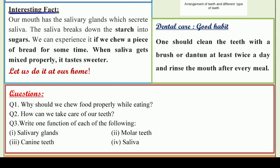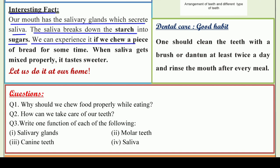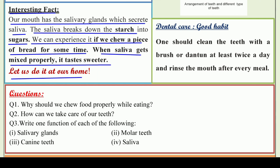Next is an interesting fact. Our mouth has salivary glands which secrete saliva. Saliva — which we commonly call 'ral' — is secreted continuously from the salivary glands inside our mouth. The saliva breaks down the starch into sugars. The starch present in our food is broken down and converted into sugar by saliva. We can experience this if we chew a piece of bread for some time — when saliva gets mixed properly, it tastes sweeter.